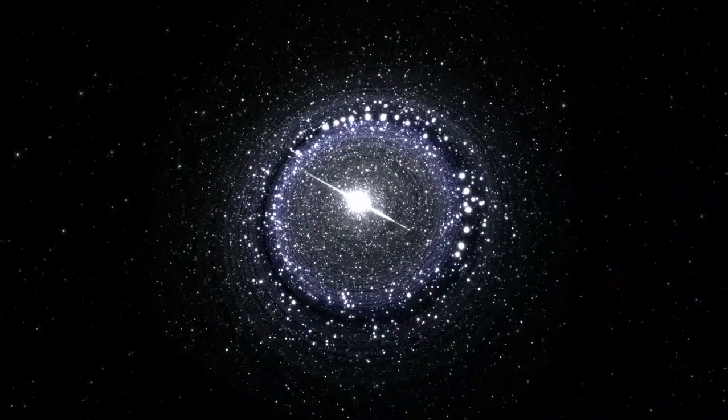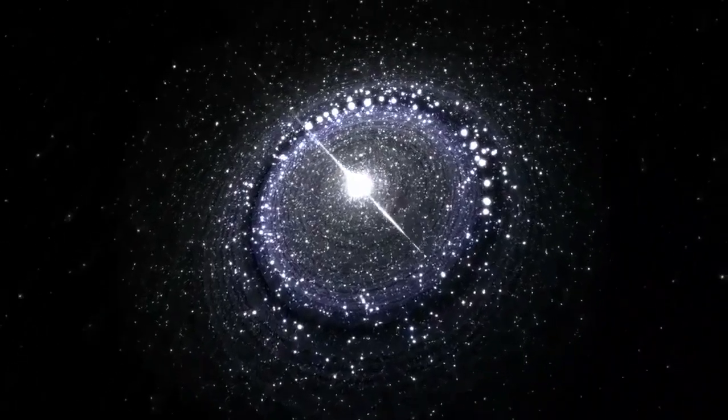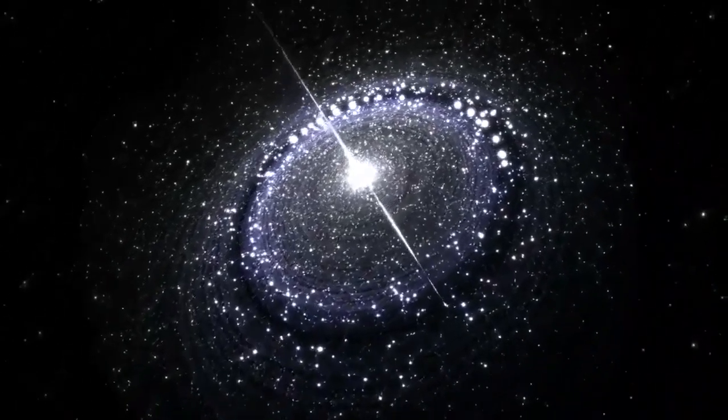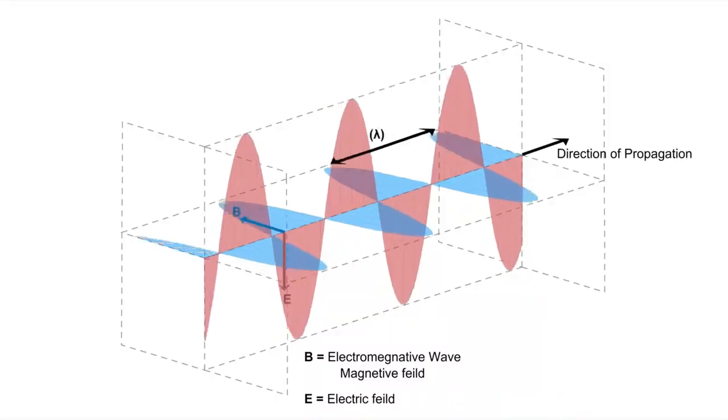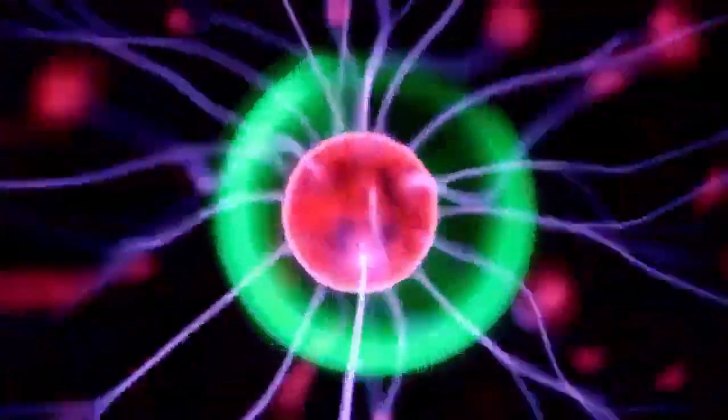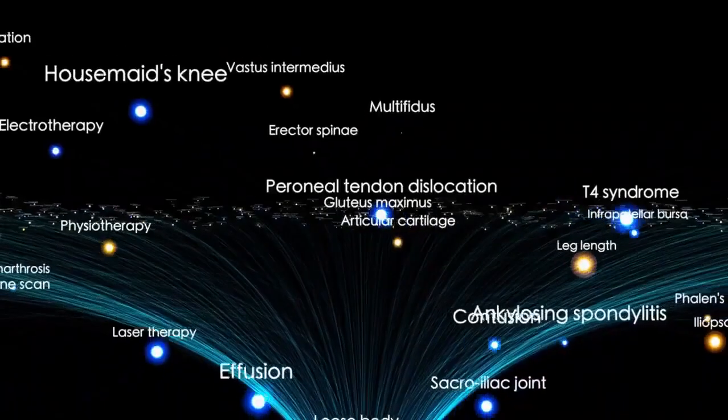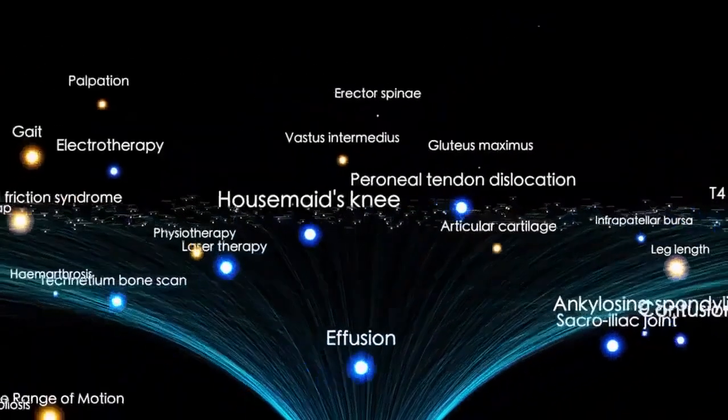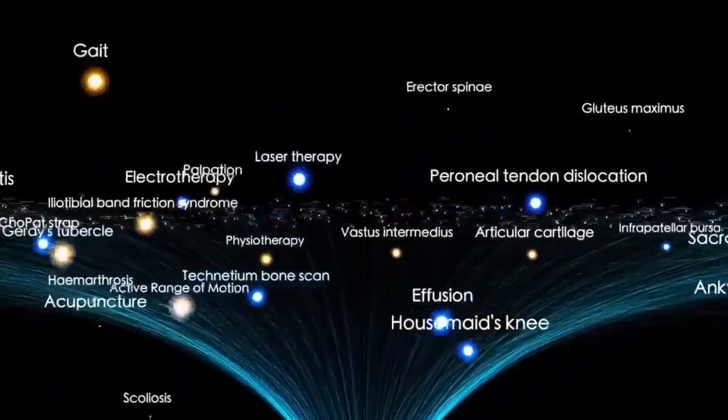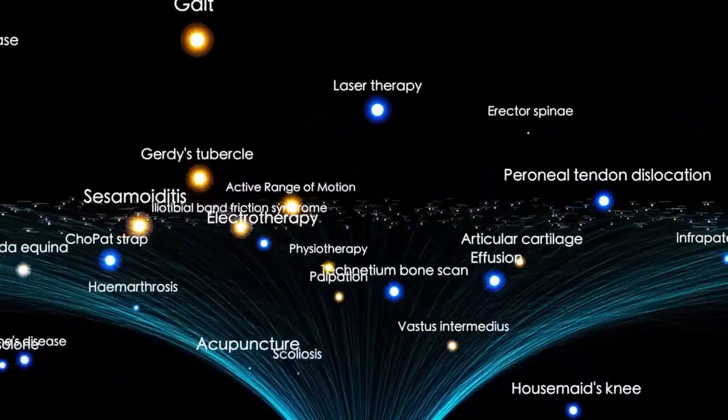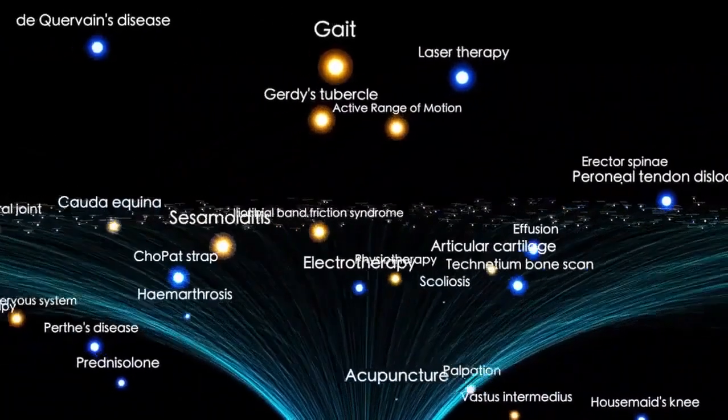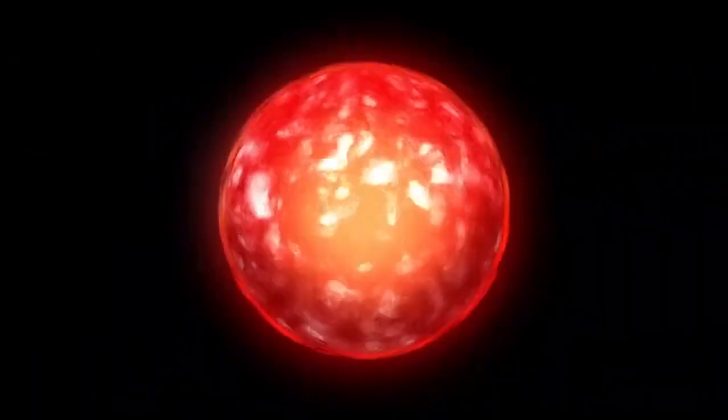Gravity, the force that pulls matter inward, acts as a constant pressure attempting to collapse the star under its immense mass. Opposing this inward pull is the radiation pressure generated by nuclear fusion occurring within the star's core. Fusion reactions release tremendous amounts of energy, producing outward pressure that counters the force of gravity. This continuous push and pull relationship between gravity and radiation pressure defines the structure and behavior of stars, particularly massive ones like Betelgeuse.